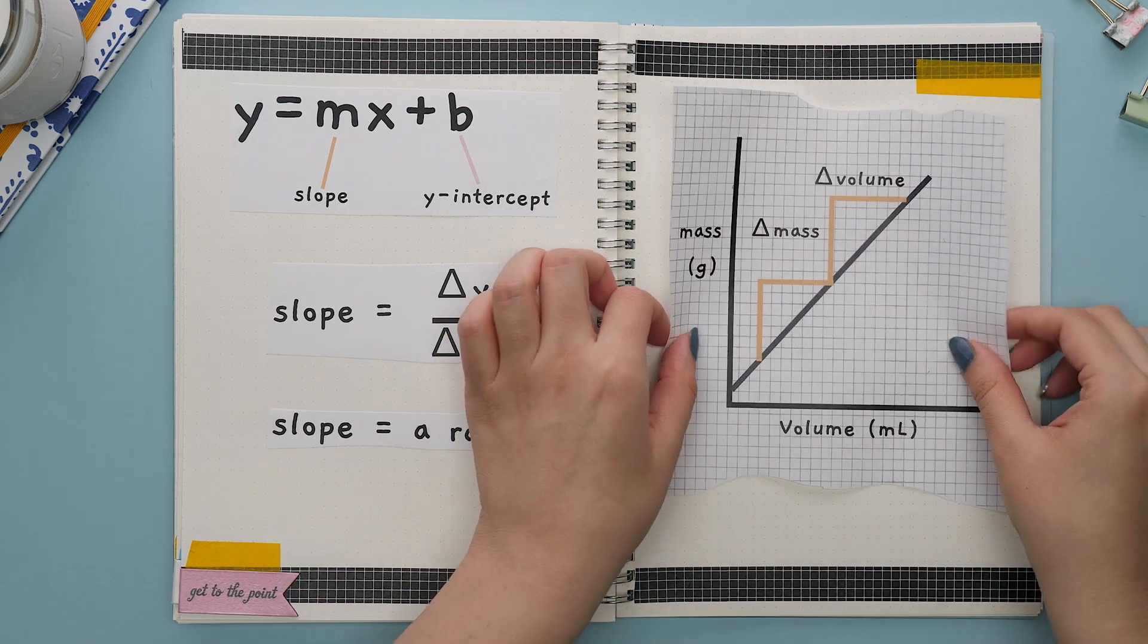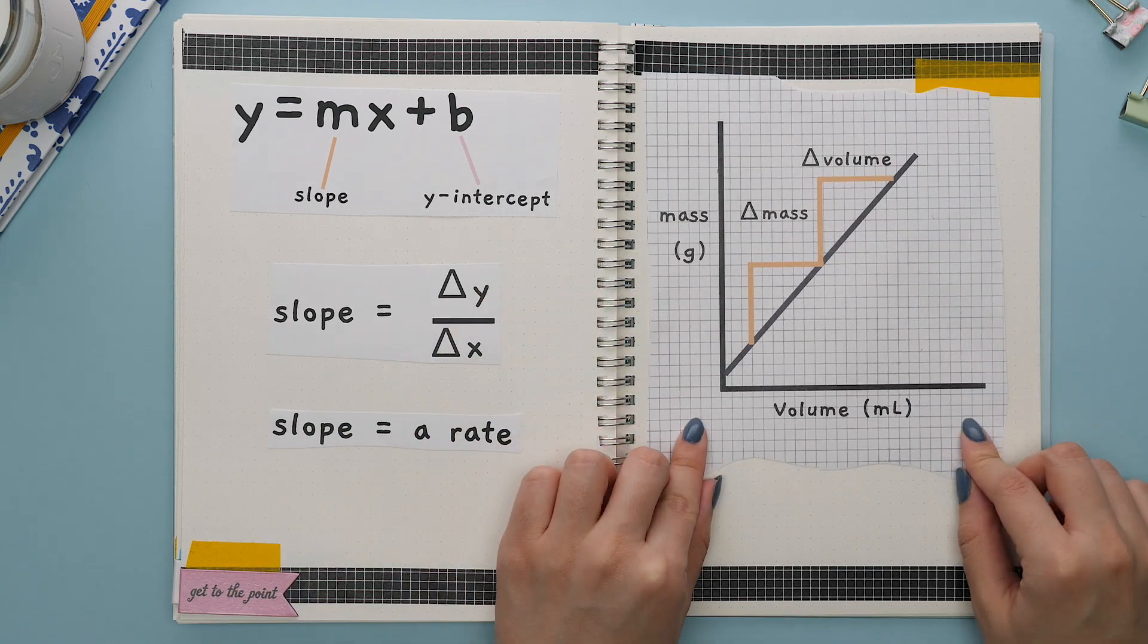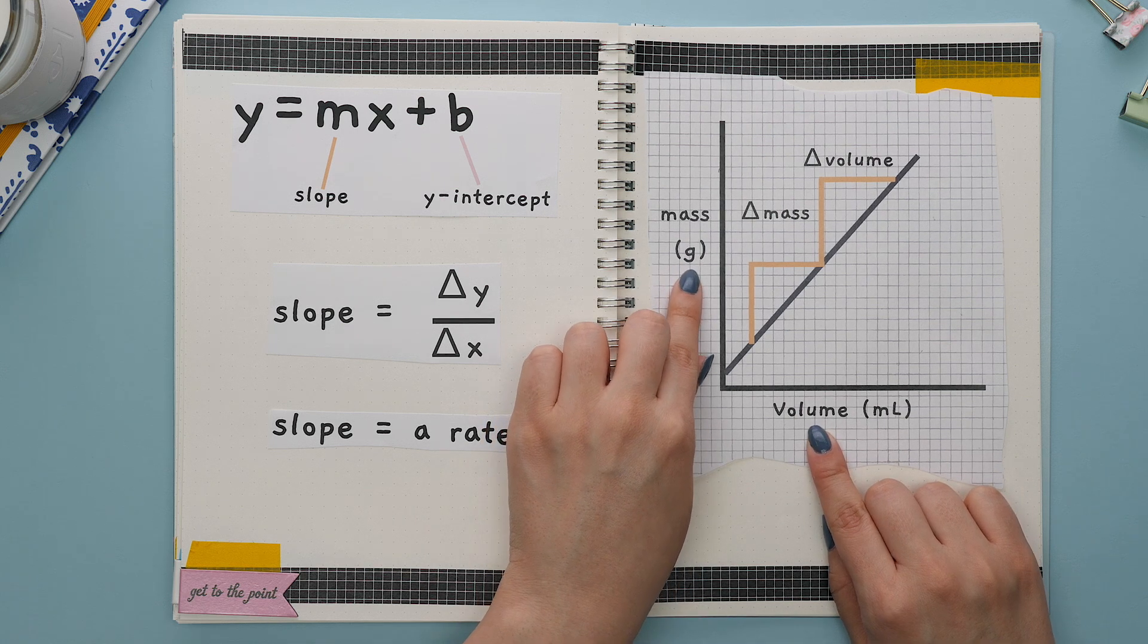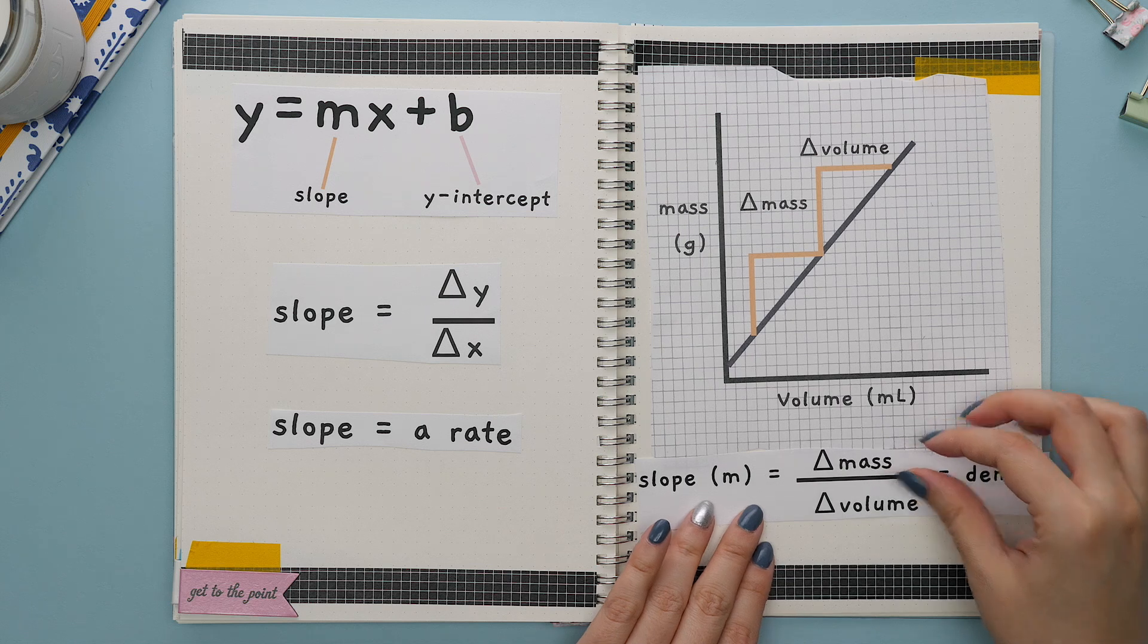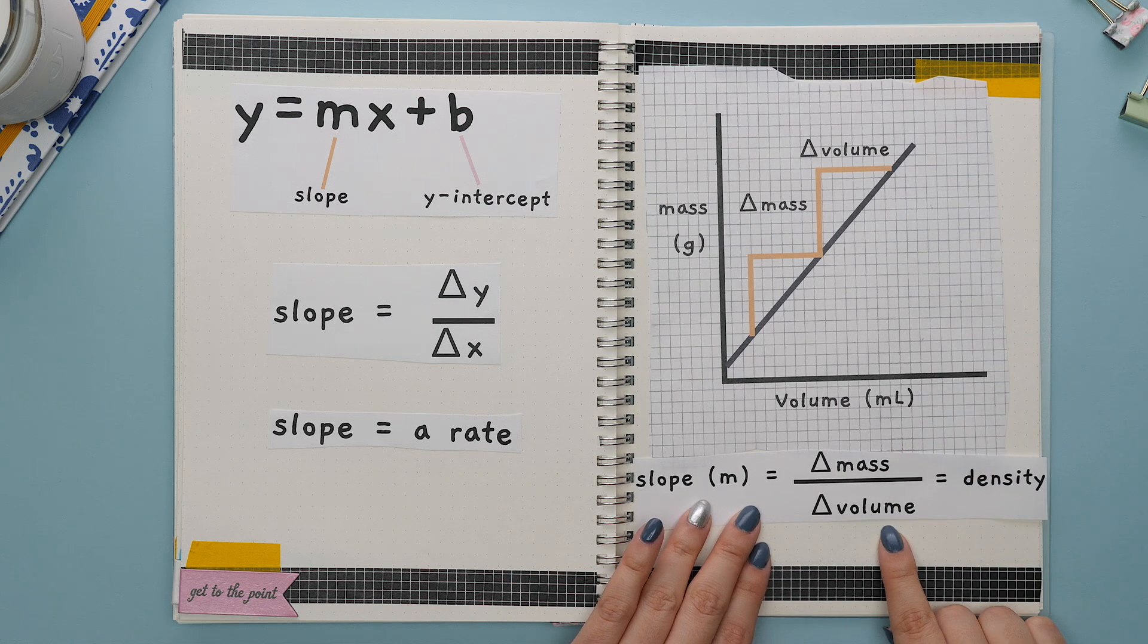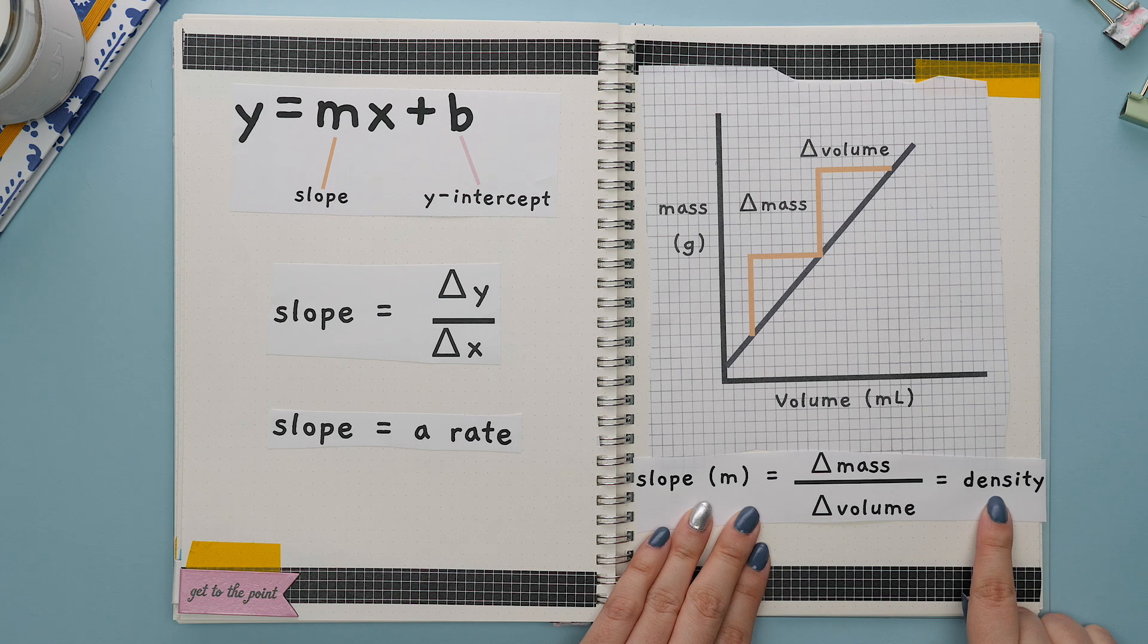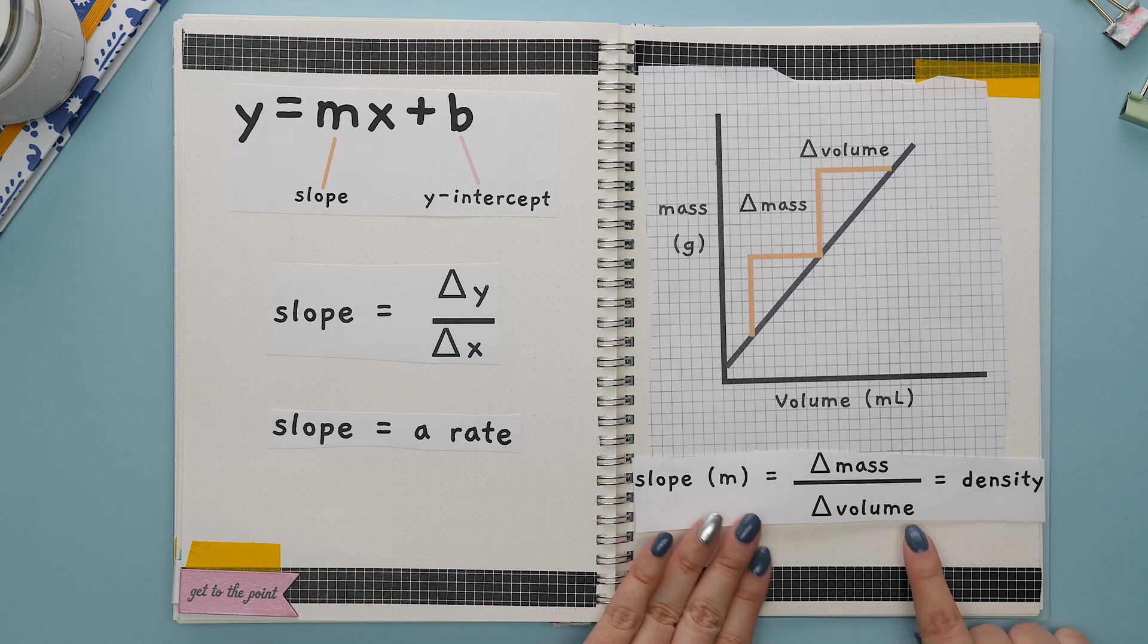For example, if we had this graph that showed the x-axis as the volume and the y-axis as mass, then the slope would show the change in mass over the change in volume. In this example, the slope is actually our density, since the formula for density is mass divided by volume.